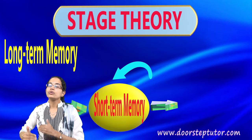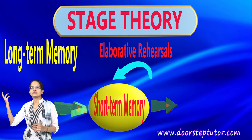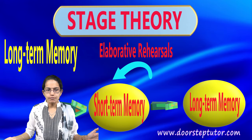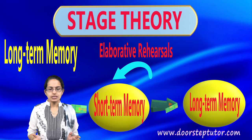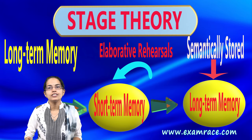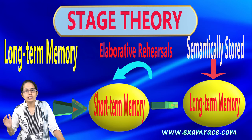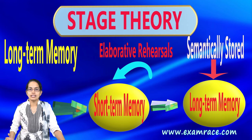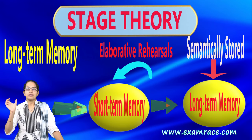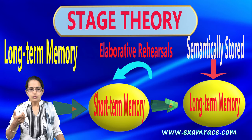When short-term memory undergoes continuous rehearsals — when you keep practicing — it goes into long-term memory, which is permanent and lasts a lifetime. The information in long-term memory is semantically encoded, meaning you have truly understood the concept. For example, if you know that 2 plus 2 is 4, you understand the concept of addition and can therefore solve 2 plus 8 as 10.